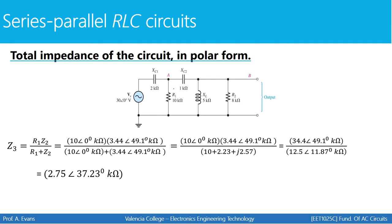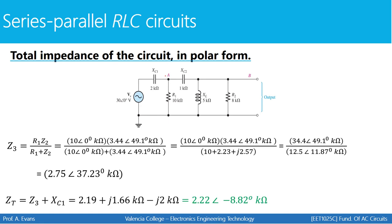At this point, we're almost done. Our final total impedance will be Z3 in series with XC1. We take Z3, convert it to rectangular form, and combine it with XC1. Since this is a capacitor, we have minus j times the capacitive reactance of 2 kilohms. Making that combination gives ZT equal to 2.22 kilohms at an angle of negative 8.82 degrees.